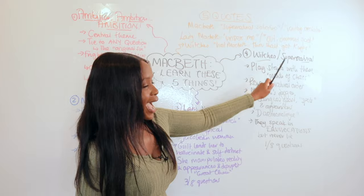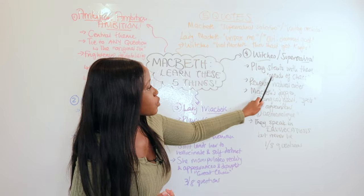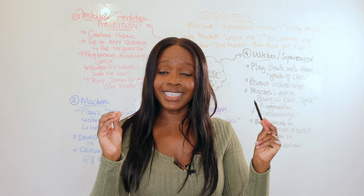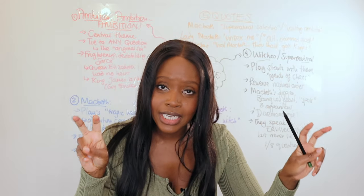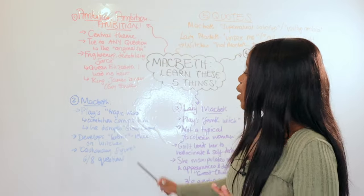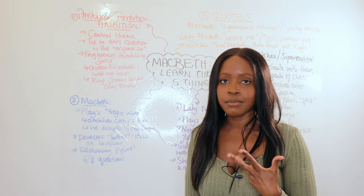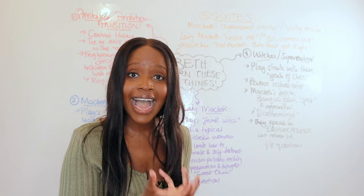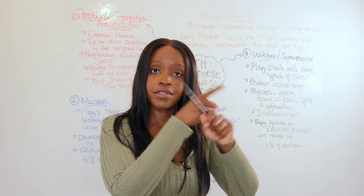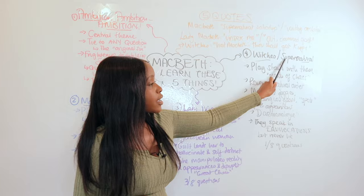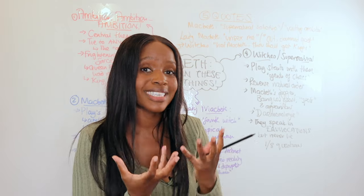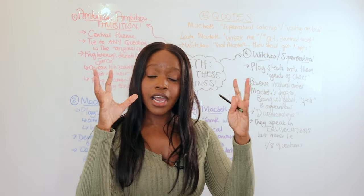Number four: the witches and the theme of the supernatural. The play deliberately starts with them saying 'fair is foul, foul is fair.' Shakespeare does this to highlight them as agents of chaos — and use that term in your essay. Any supernatural force is portrayed as an agent of chaos. Hence why Macbeth became a tragic hero: he trusted these agents of chaos who corrupted him and led him to develop hubris. Equally, the witches reverse the natural order and turn everything topsy-turvy. There are also supernatural hallucinations used to highlight guilt.